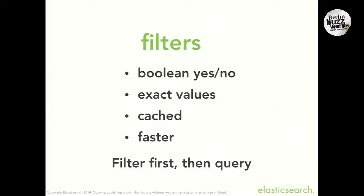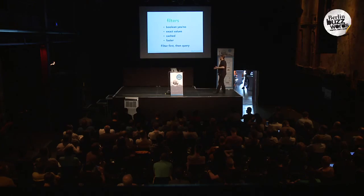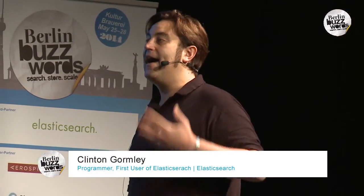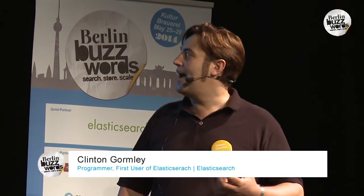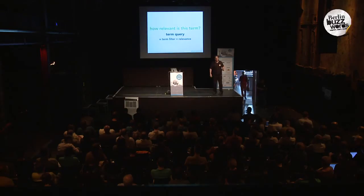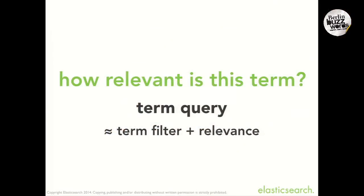To recap: filters give Boolean results — yes or no, it either matches or it doesn't — used for exact values, cacheable, faster than queries usually. You want to filter first and then query. Now we move on to queries, which are the more interesting thing. If somebody's coming from a relational database background, it's the kind of magical part of how Elasticsearch works. The question is: how relevant is this term we're looking for? The building block to answer this question is the term query, which is pretty much like the term filter plus relevance. You probably won't use the term query very often yourself — it's a low-level query — but understanding how it works will help you understand how the match query works.